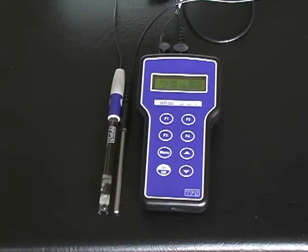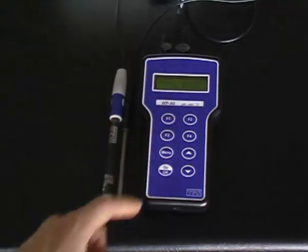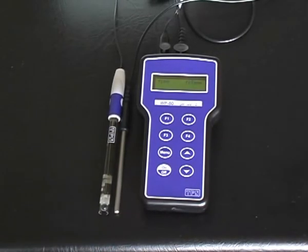To calibrate a TPS WP80 pH meter, the calibration procedure is the same as the 90FLT. First, press menu and then press F1 to cal. To complete the cal, however, press F1 instead of Enter.